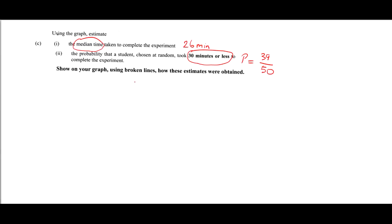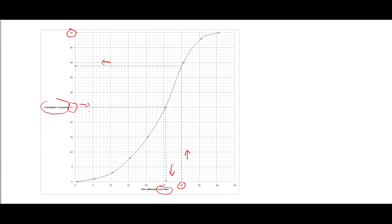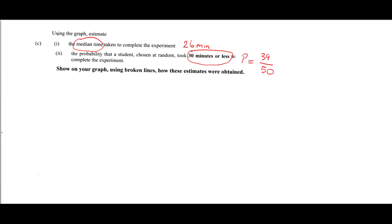Notice that the question says to show on your graph the broken lines used to obtain your estimates. For the median, we divided the total cumulative frequency by 2 to get 25, went horizontally to the curve, then came down to read approximately 26 minutes. For the probability question, we read off at 30 minutes, went up to the curve, drew our dotted lines, and got 39. These are the typical questions asked on cumulative frequency curves. Thank you.